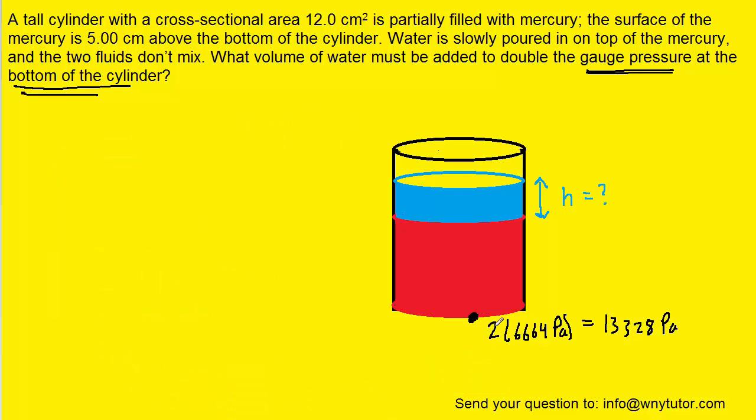Because there are two fluids, water and mercury, there are two sources of gauge pressure. We have ρ_Hg × g × h_Hg, plus ρ_water × g × h_w, where h_w is the water height. We set this equal to the total gauge pressure at the bottom, which is 13,328 pascals.